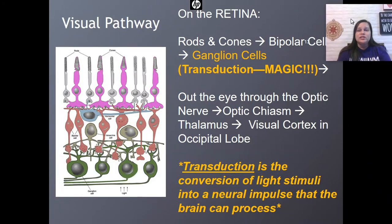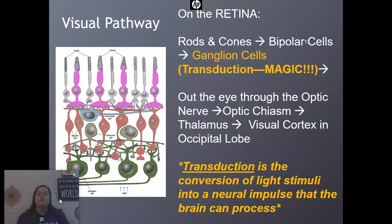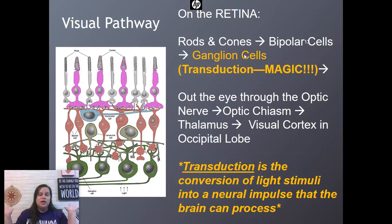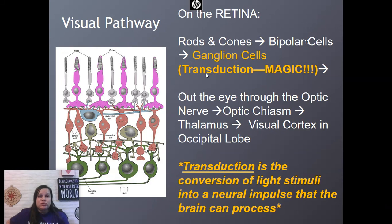You need to know the visual pathway — the order that light passes through the eye and the order that the neural signal passes through the eye. We already had: cornea, pupil, lens, vitreous body, retina. Once we get to the retina, light passes through the rods and cones, then to the bipolar cells, then the ganglion cells where transduction happens. Transduction means the conversion of a light stimulus into a neural impulse that the brain can process — going from light stimuli from the environment to a neural signal the brain can actually process. Now that neural signal exits the eye through the optic nerve.